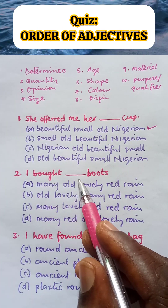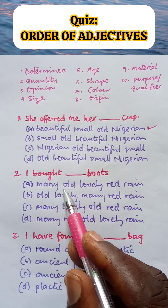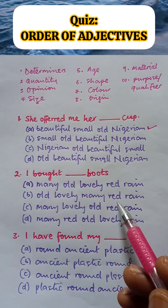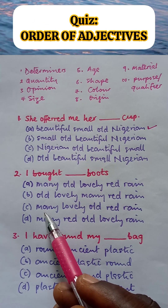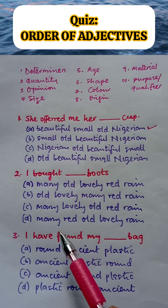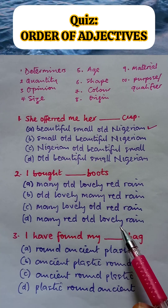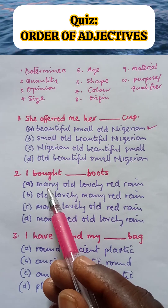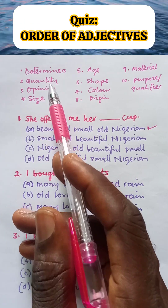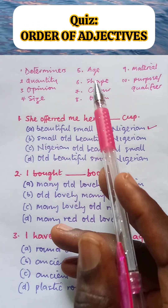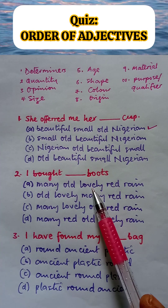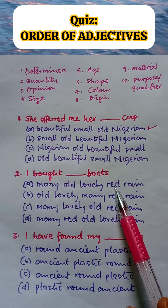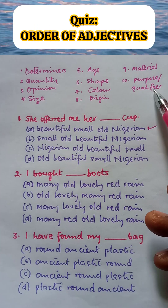Question 2. I bought blank boots. A: Many old, lovely, red rain boots. B: Old, lovely, many red rain boots. C: Many lovely, old, red rain boots. And D: Many red, old, lovely, rain boots. Now look at the words: many, old, lovely, red, and rain. Many falls under quantity. Old is under age. Lovely is opinion. Red is under color. And rain is under qualifier or purpose.